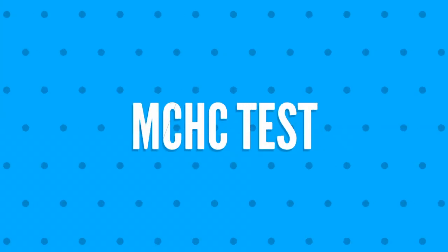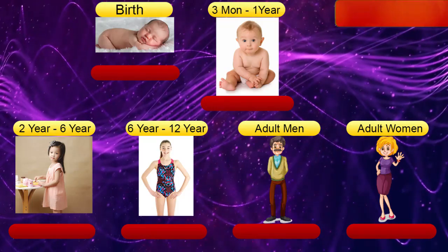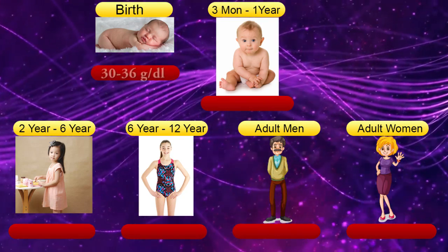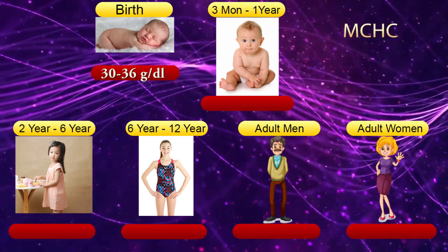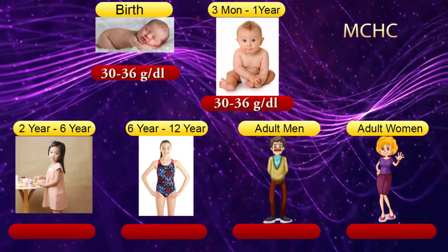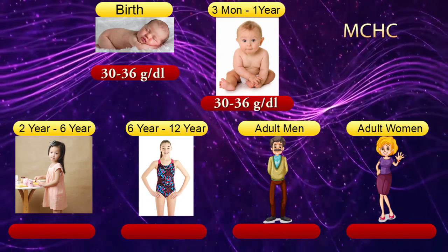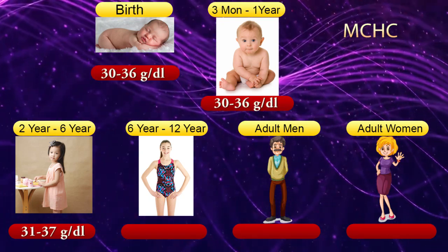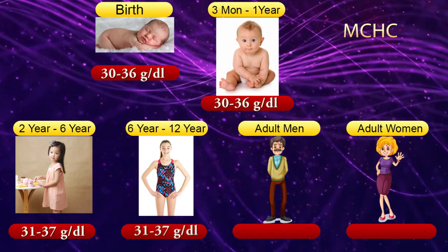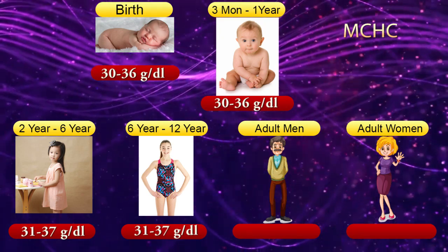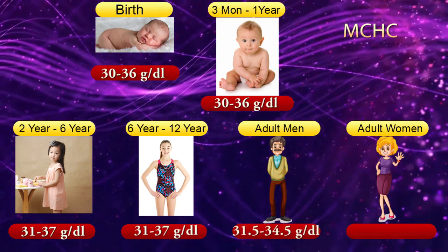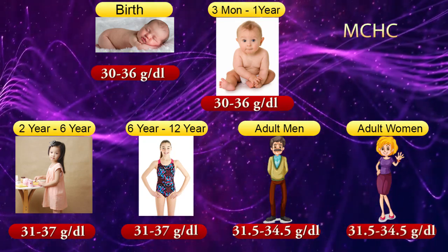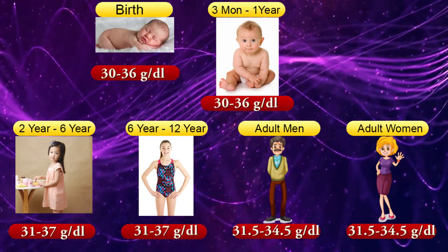Mean corpuscular hemoglobin concentration (MCHC) reference ranges. At birth: 30–36 grams per deciliter. From 3 months to 1 year: 30–36 grams per deciliter. From 2 to 6 years: 31–37 grams per deciliter. From 6 to 12 years: 31–37 grams per deciliter. Adult men: 31.5–34.5 grams per deciliter.